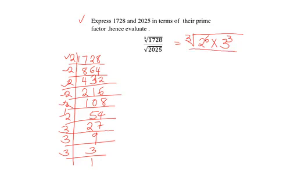Now divide by the prime factors of 2025. And this number is not divisible by 2, so we go to the next prime number, which is 3. By 3, this gives us 675. By 3, it gives us 225.